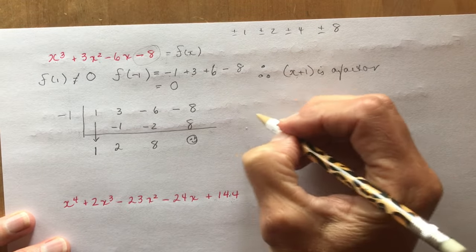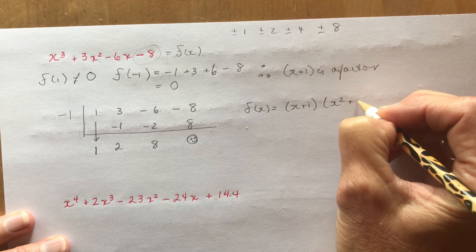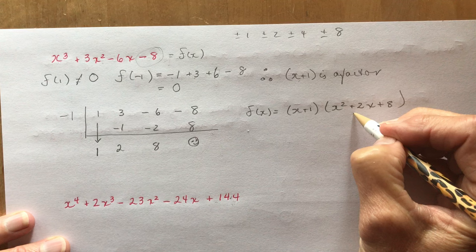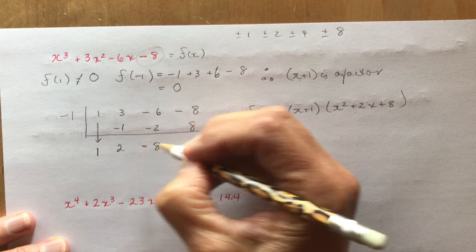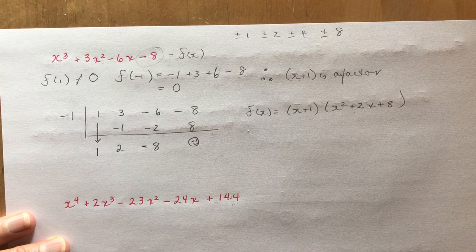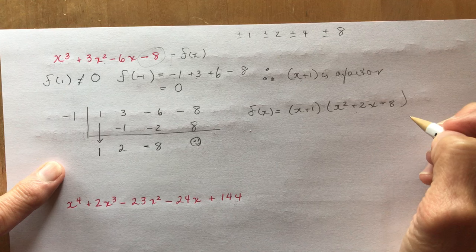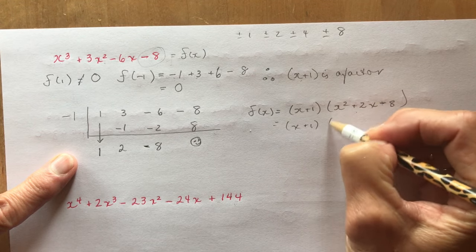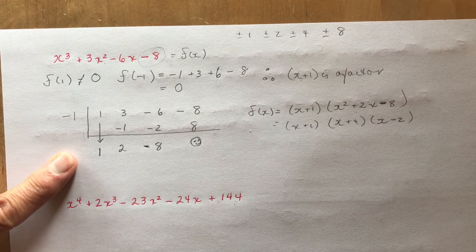So I get f(x) equal to x plus 1 times x squared plus 2x minus 8. What multiplies to minus 8 and adds to 2? That would be plus 4 and minus 2. So f(x) equals x plus 1 times x minus 4 times x plus 2.